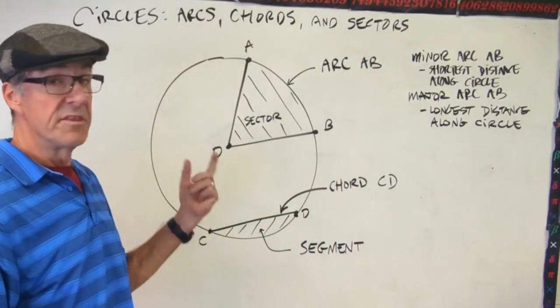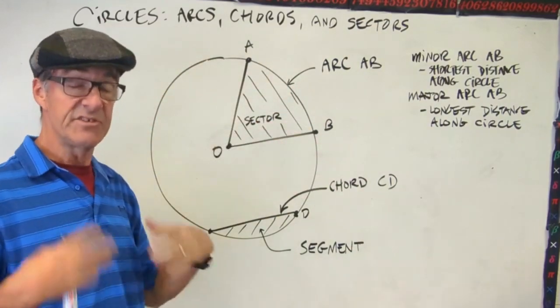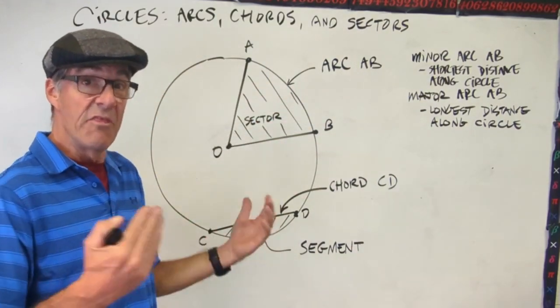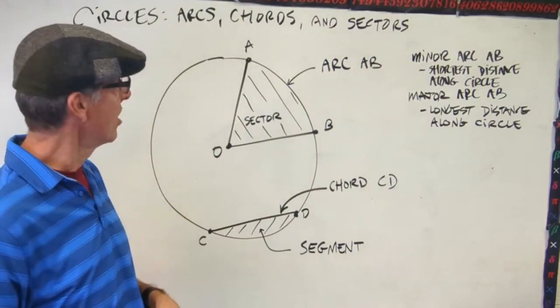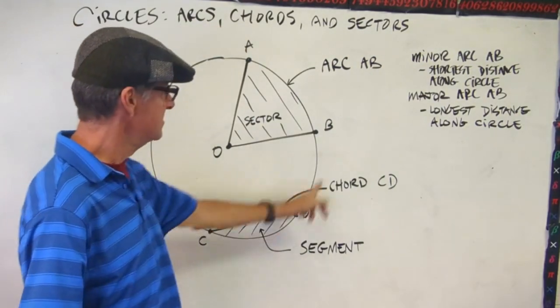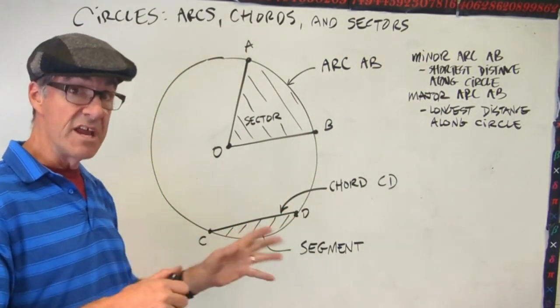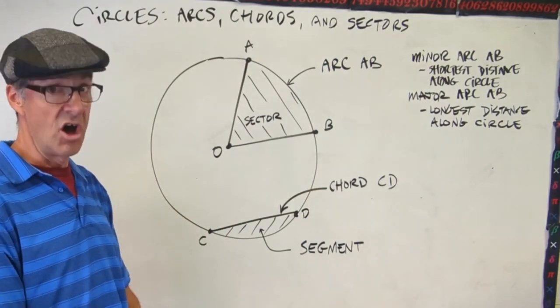The minor arc is just the shortest distance between A and B, and that's the one you would intuitively think of when we talked about arc AB. But there's a second arc, the major arc, which goes the other way, all the way around from A to B. So the minor arc is the shortest distance along the circle, and the major arc is the longest distance.